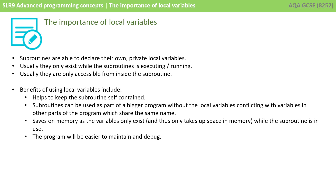This means there are several benefits to using local variables. These include the fact that it helps to keep the subroutine self-contained. Subroutines can be used as part of a bigger program without the local variables conflicting with variables in other parts of the program which share the same name. It also saves on memory, as the variables only exist and thus only take up space in memory while the subroutine is in use. And it also makes the program easier to maintain, test and debug.